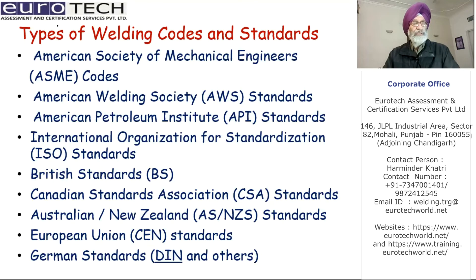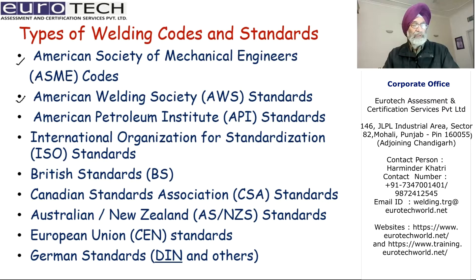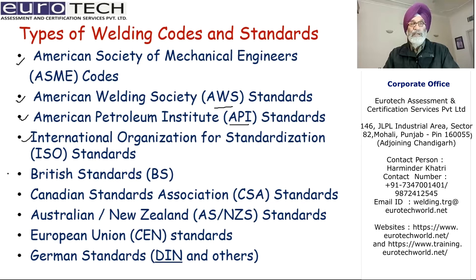Let us see what are the types of welding codes and standards. Firstly, American Society of Mechanical Engineers — that is the ASME code. American Welding Society — AWS standards. American Petroleum Institute — that is API standards. International Organization for Standardization — ISO standards. And the less prominent ones: British standards, Canadian standards, Australian and New Zealand standards, European Union standards, and German standards.